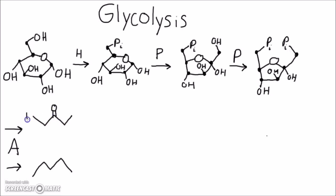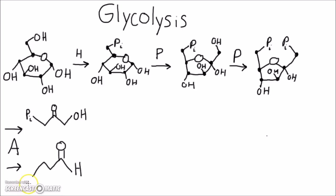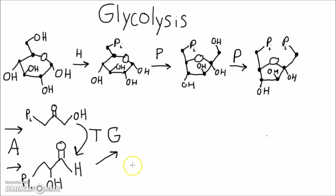Dihydroxyacetone phosphate is a ketone group with a phosphate on the left and an OH on the right. Glyceraldehyde-3-phosphate is an aldehyde group — a double-bond O with an H on that carbon — with OH in the middle and phosphate on the left. Triose phosphate isomerase converts the ketone to the aldehyde. Then glyceraldehyde-3-phosphate dehydrogenase converts it to 1,3-bisphosphoglycerate, which has a phosphate on the right, OH in the middle, and another phosphate on the left.